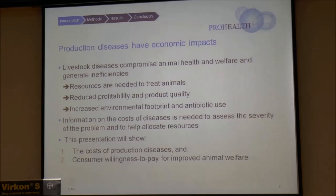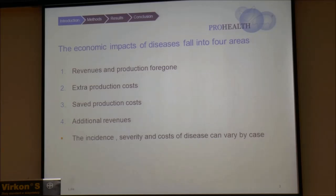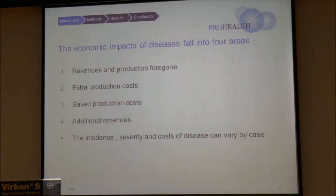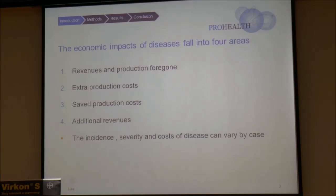If you think about the economic impacts of animal diseases, they can have different types of impacts. Probably the most important are that they affect revenues and cause extra costs. Animals may die, their growth rates may be reduced, carcass condemnations may increase, the fertility of sows might be reduced, causing losses in sales revenues and production. In addition, we need labor, medicines, maybe extra feed, some other resources, sick pens, and many other resources in order to treat sick animals or to prevent diseases from occurring.